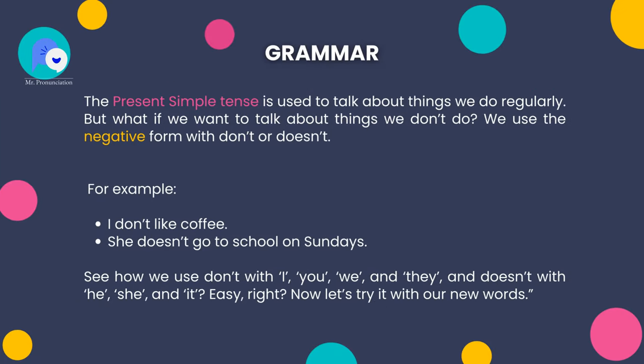Part 1: Grammar. The present simple tense is used to talk about things we do regularly. But what if we want to talk about things we don't do? We use the negative form with don't or doesn't. For example, see how we use don't with I, you, we, and they, and doesn't with he, she, and it.